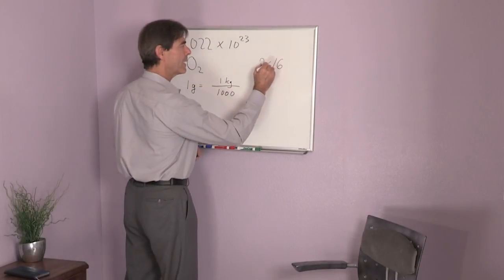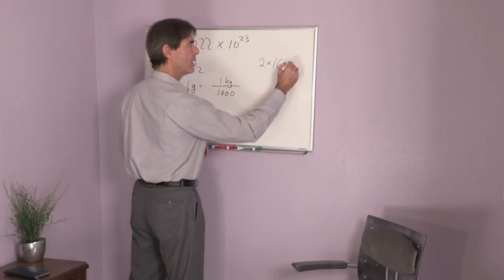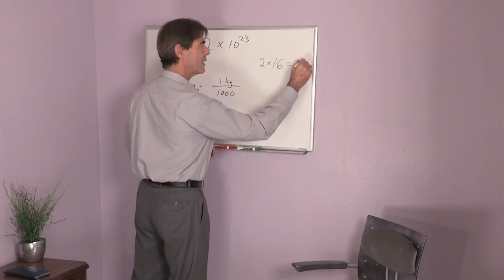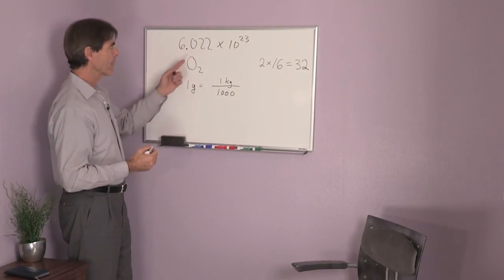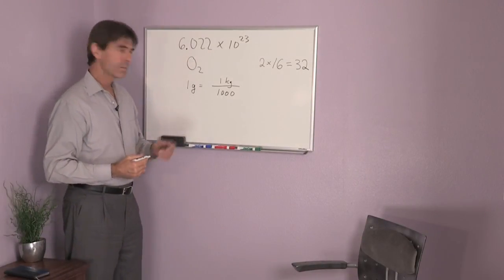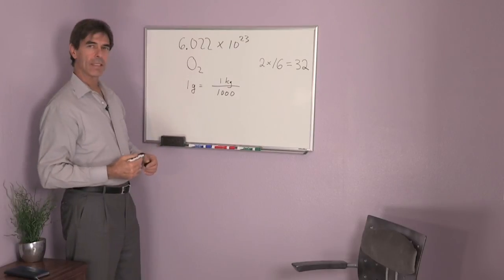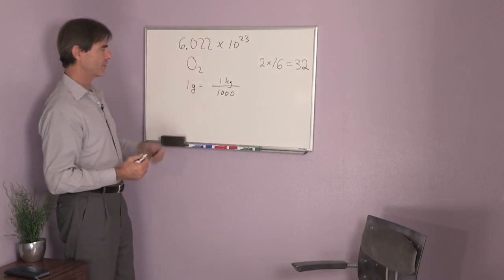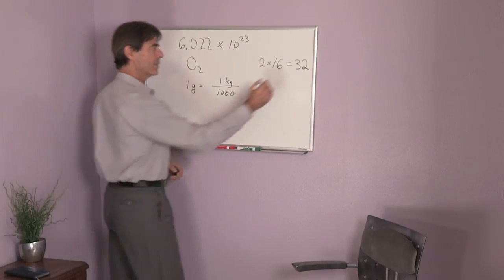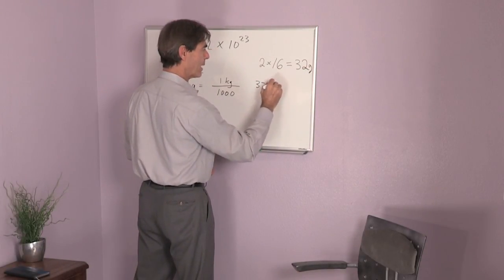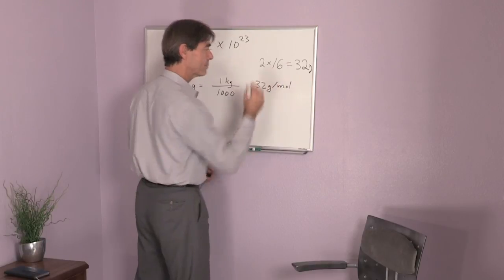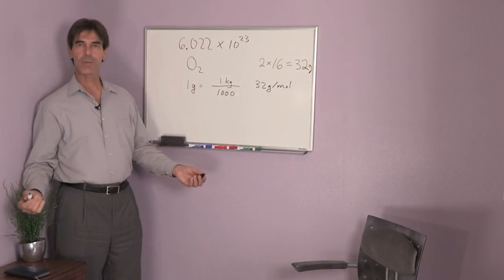And the answer to this is there's 32 grams of oxygen in a mole of oxygen. So there's 32 grams per mole, and that's the answer to our question.